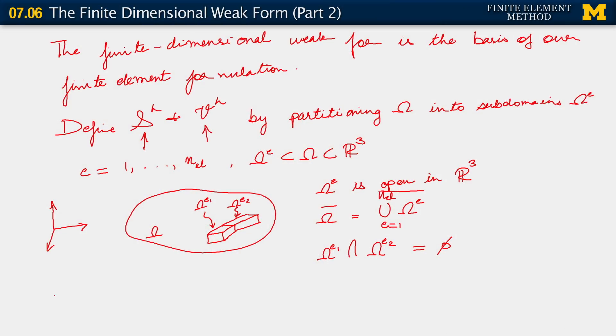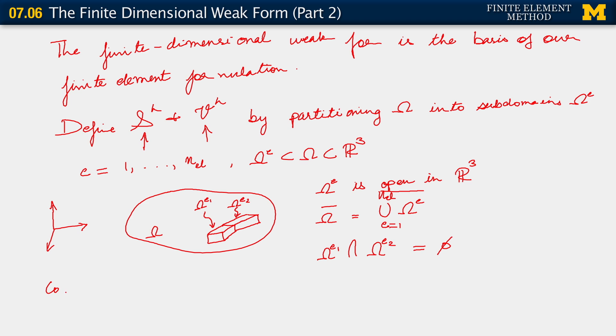What that implies is that we are going to construct a partition where each omega e is what we call a hexahedral element. So consider hexahedral element subdomains omega e, e going from 1 to Nel.